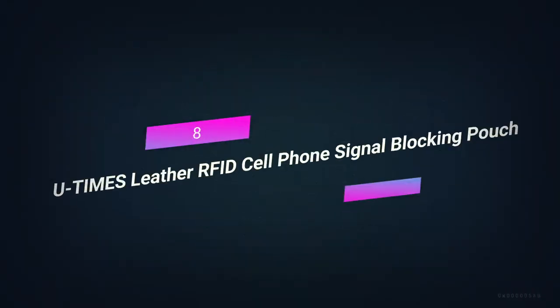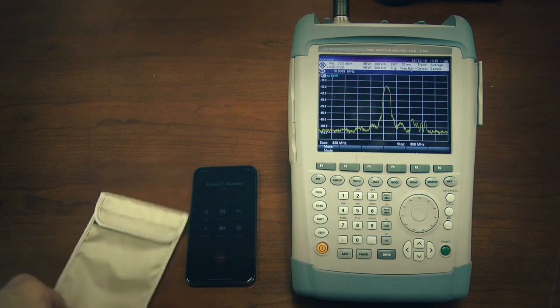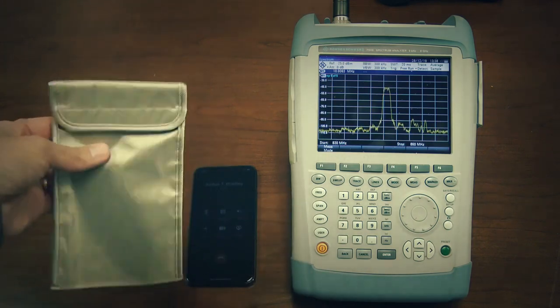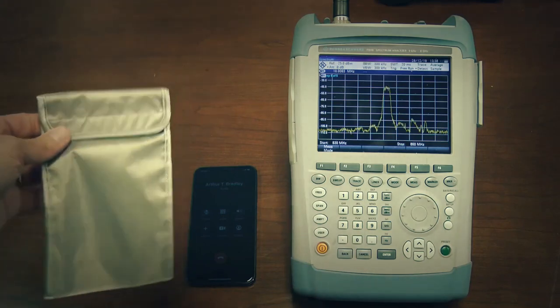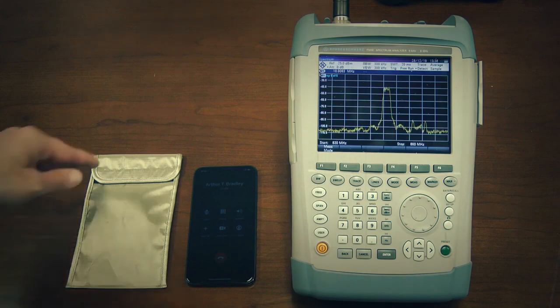Number 8, U-Times Leather RFID Cell Phone Signal Blocking Pouch. This is a leather case for cell phones that can stop RFID signals from getting through. If you don't want your RFID information to be stolen, the pouch is a good way to protect yourself. RFID technology is most often used to steal information from credit or debit cards, but it can also be used to steal information from cell phones. Even though this leather pouch might not look great, it will do the job.